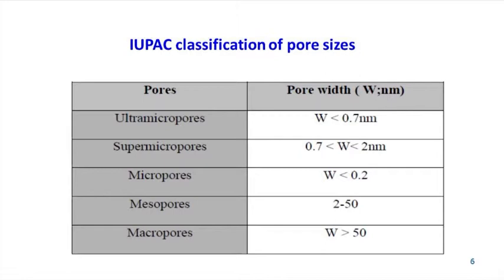The range of pore sizes, defined according to the International Union of Pure and Applied Chemistry (IUPAC), is summarized in this table. They are classified as ultra micropores with pore width less than 0.7 nanometers, super micropores with pore width between 0.7 to 2 nanometers, micropores with pore width less than 0.2 nanometers, mesopores, and macropores with pore width greater than 50 nanometers.